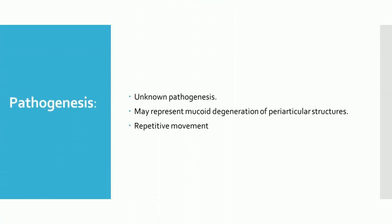Pathogenesis: The pathogenesis of ganglion cysts is unknown, but it has been suggested that they represent mucoid degeneration of periarticular structures. The role, if any, of repetitive movement in causation is uncertain; it may induce enlargement of the lesion and may provoke symptoms.